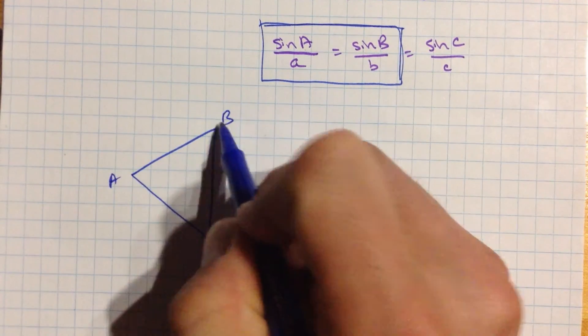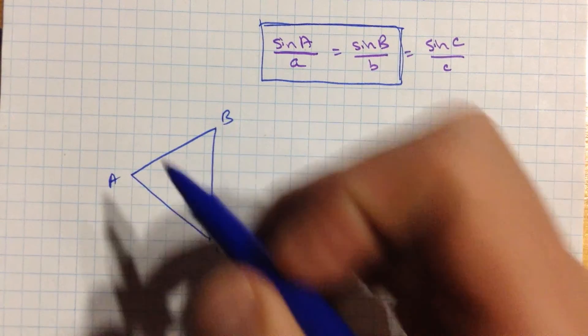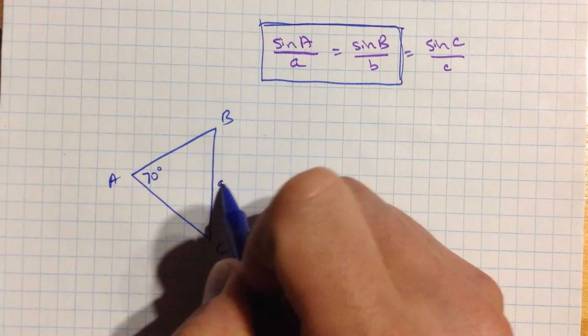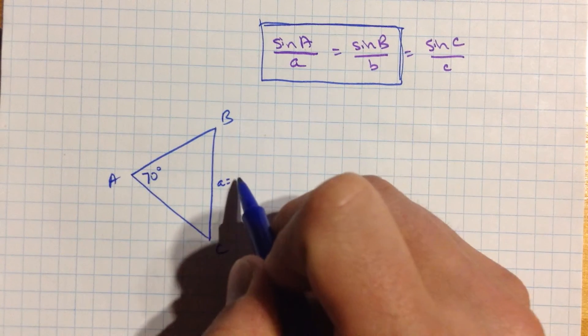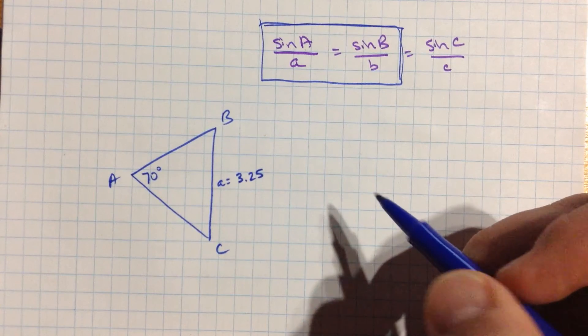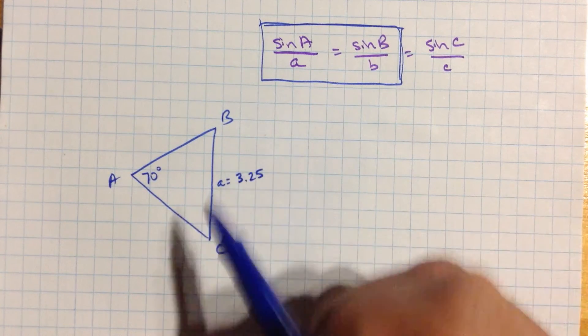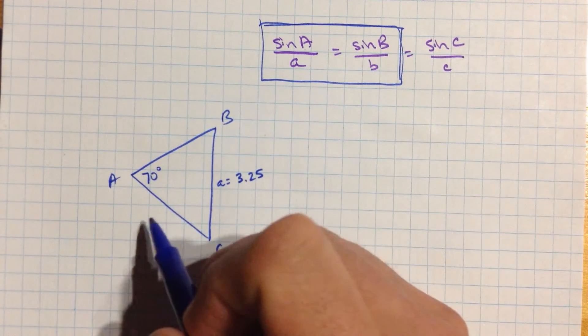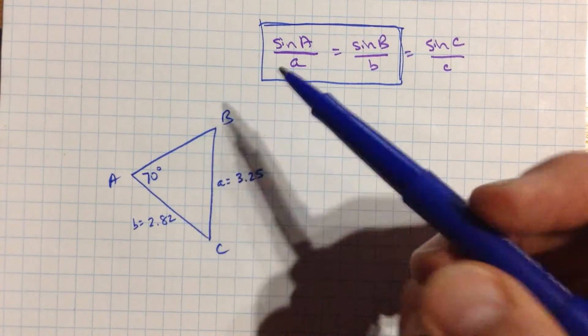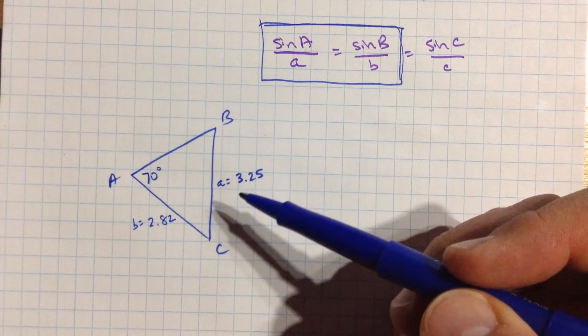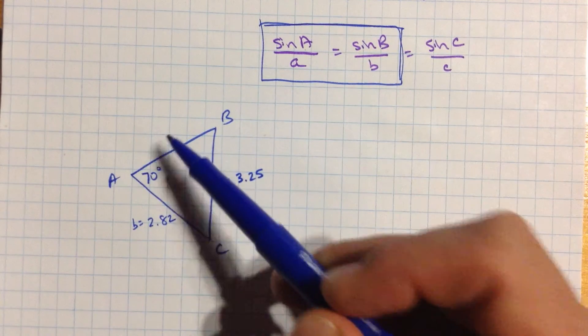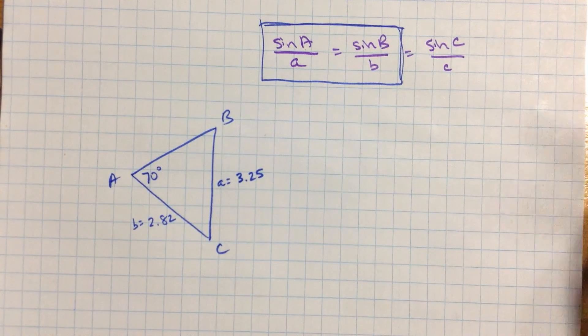Let's call this A, B, C. And let's say angle A is 70 degrees. And side a, I'll write it in here, little a, is 3.25. And let's say you know one other side length. We'll do the b one here, which is 2.82, that's b. So the question is, can you find the other values in here? And particularly, can you find this other side over here, side c?